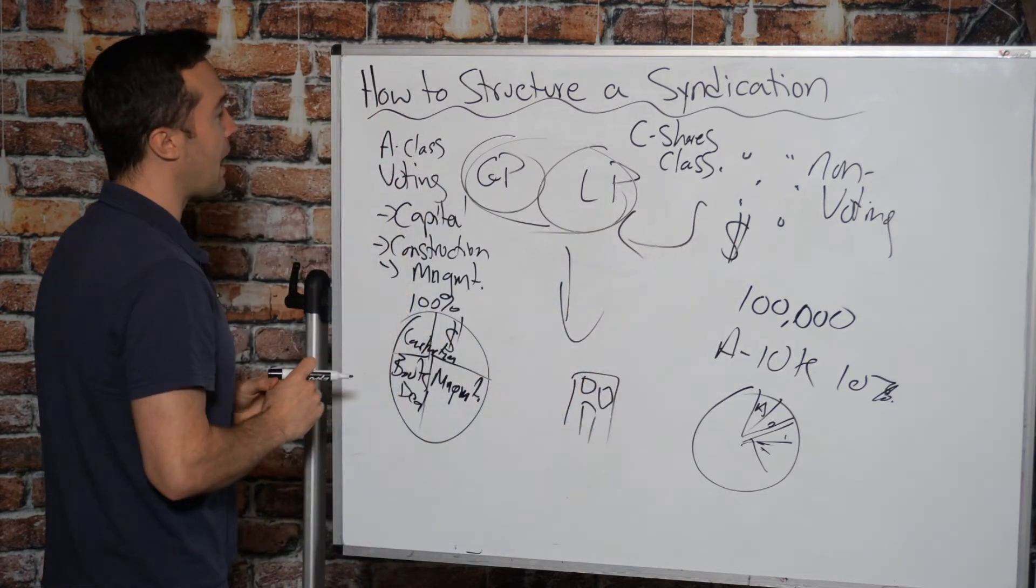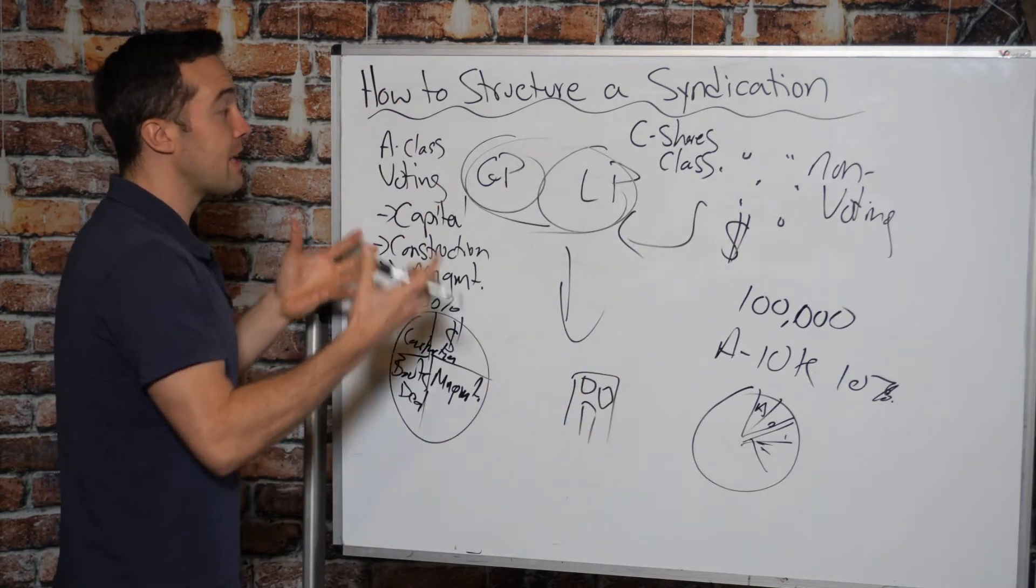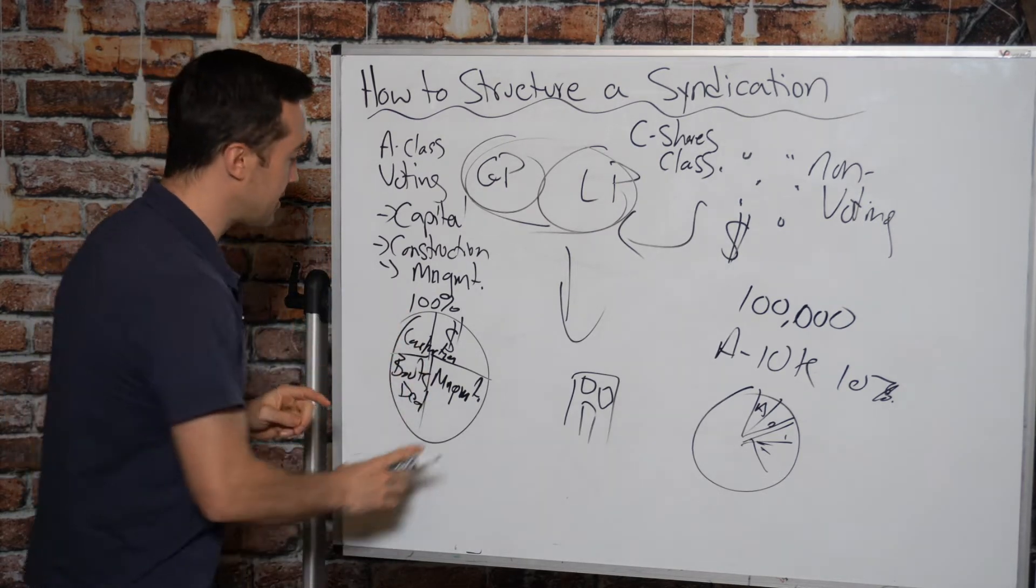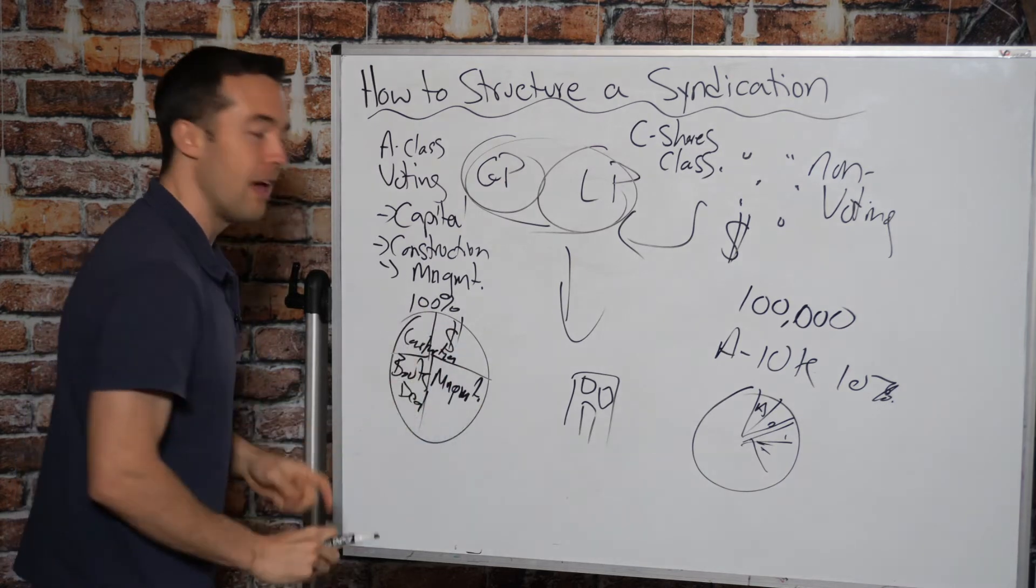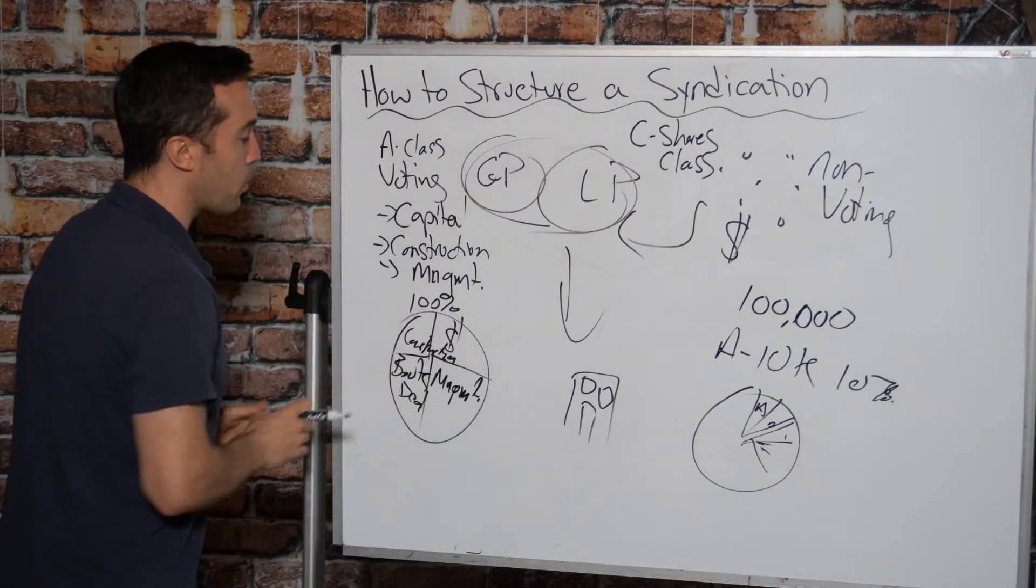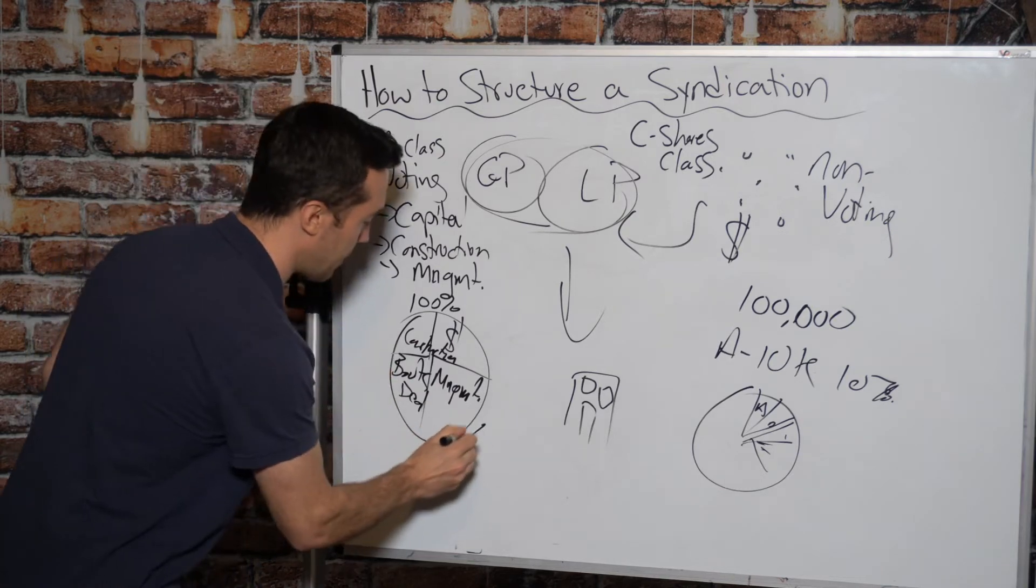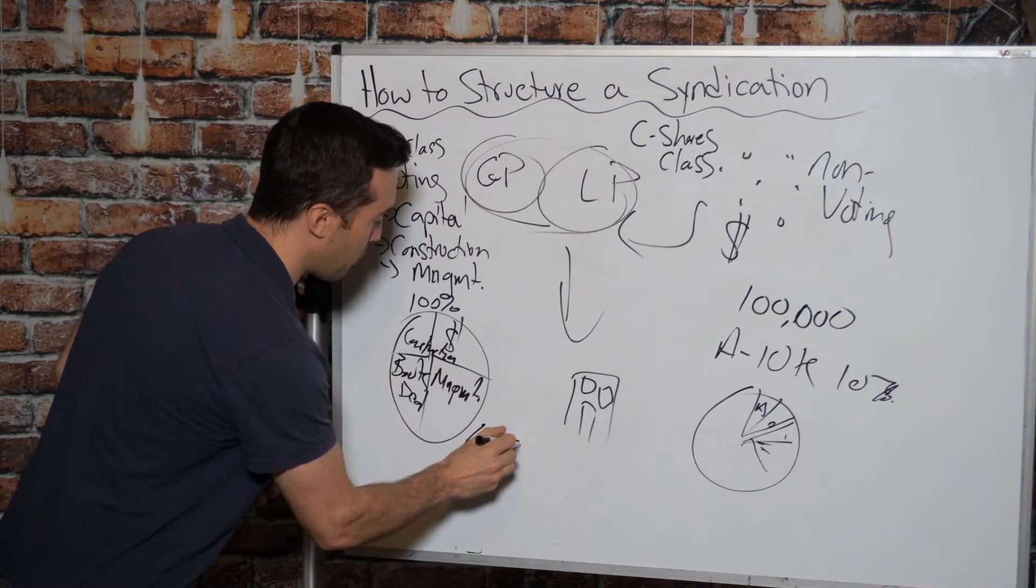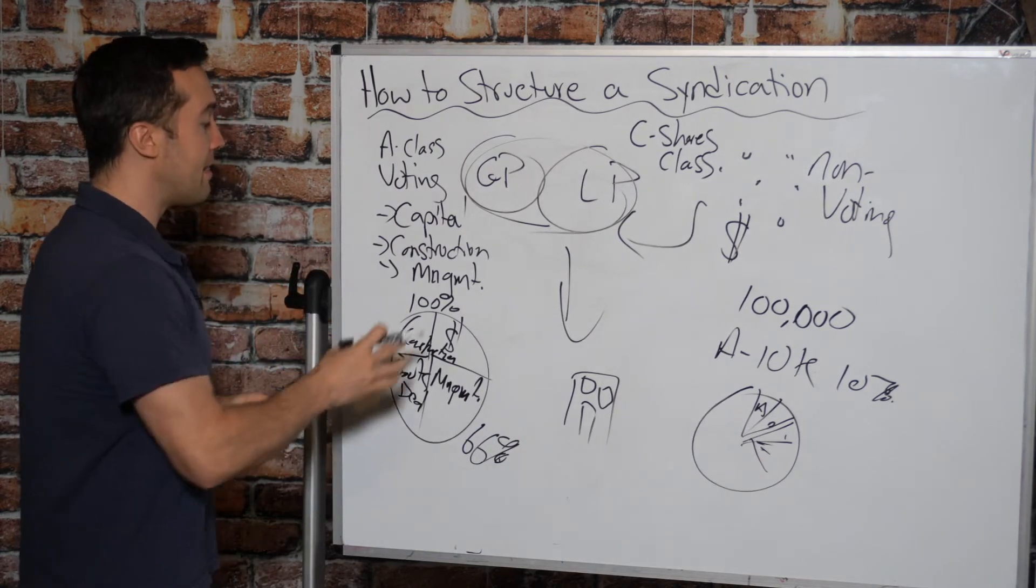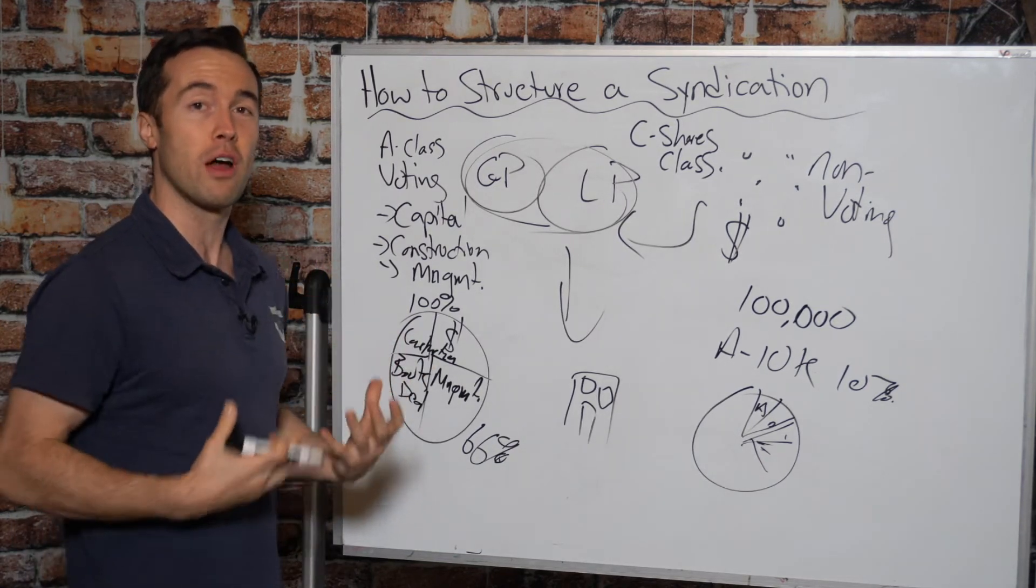On the GP side, we have voting shares and this is how the general partnership makes decisions about the property. Now, remember how I said this is how the general partnership is divvied up? You have to pay very close attention to this because if one person controls 66% of the general partnership or 51%, however you structure, if they have a majority,